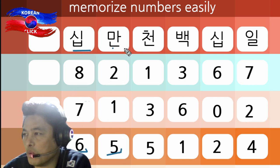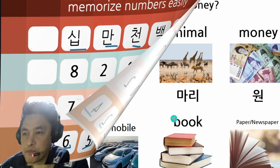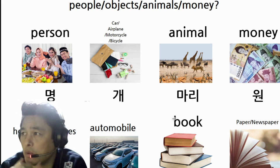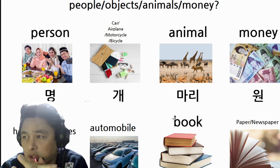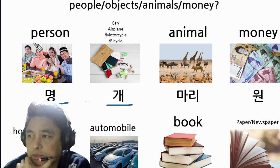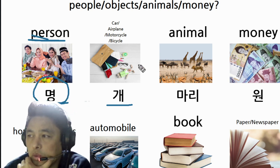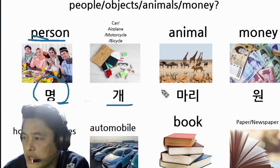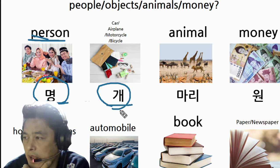How can you read numbers for people, objects, animals, or money? For animals or money, so for a person — you say the person counter. Person is 'myung' or 'saram.' For a table or apple or orange, this is okay. Animal uses one counter; money uses another.